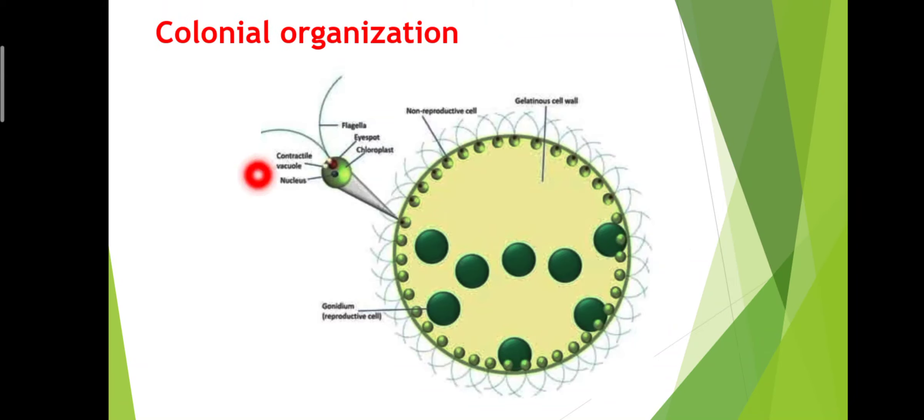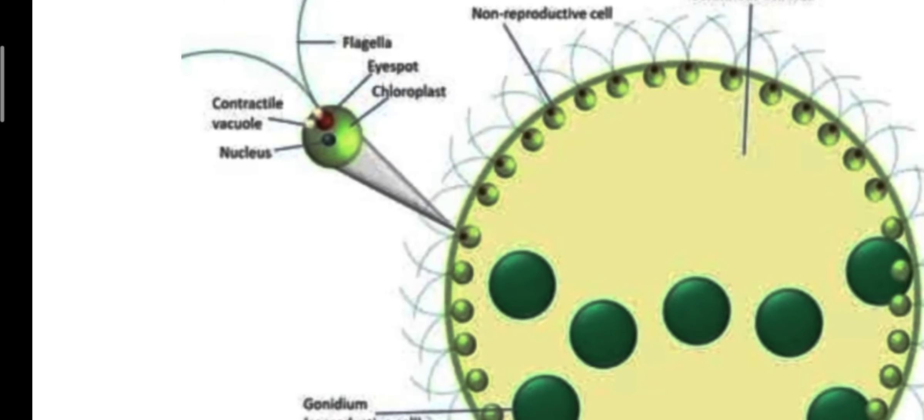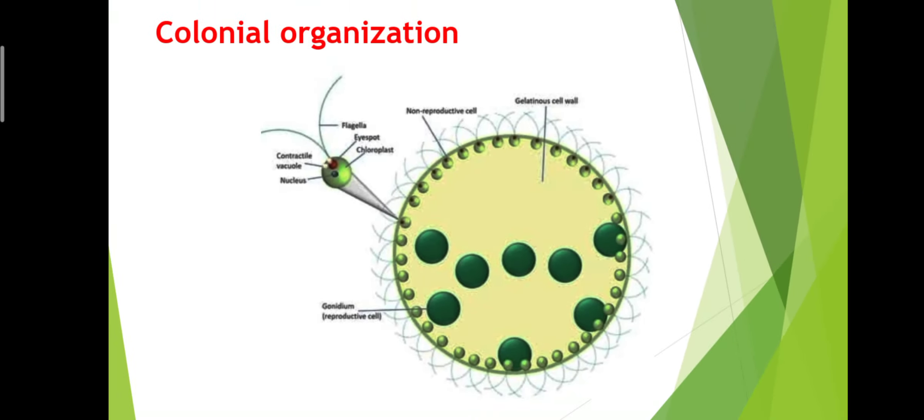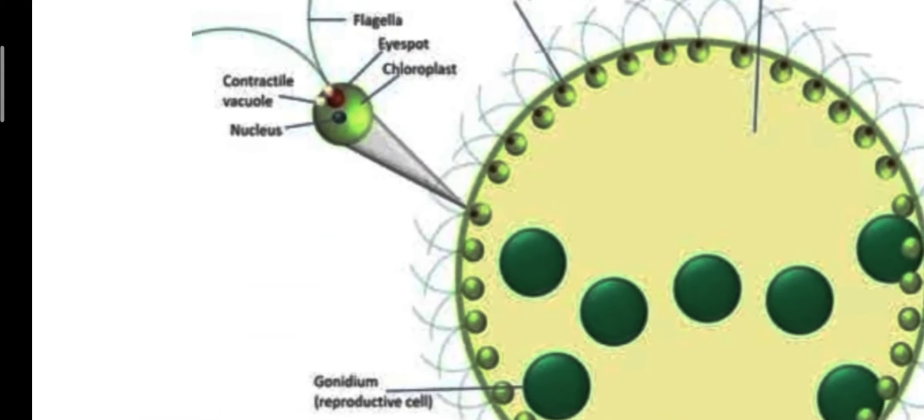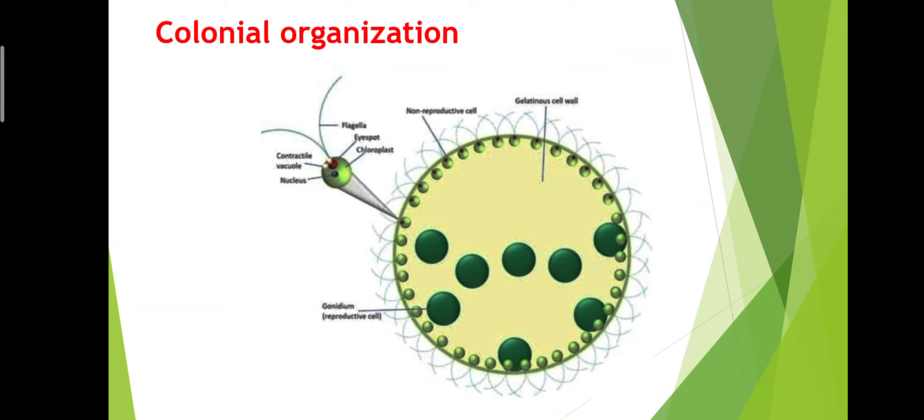An example of colonial organization is Volvox. It is the best example of colonial organization. A single cell lived in colony. Each cell performs all the vital functions: respiration, excretion, reproduction, nutrition, etc. All the processes occur in each cell.